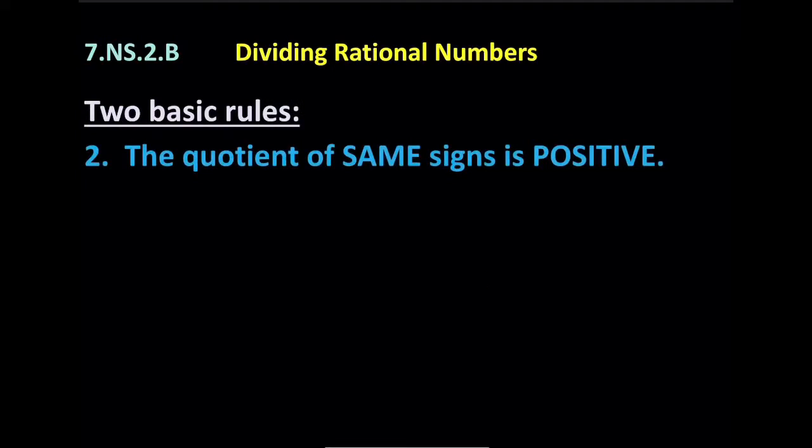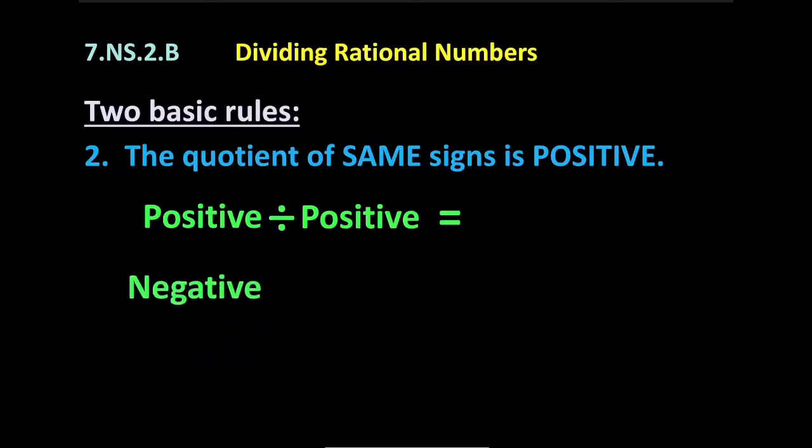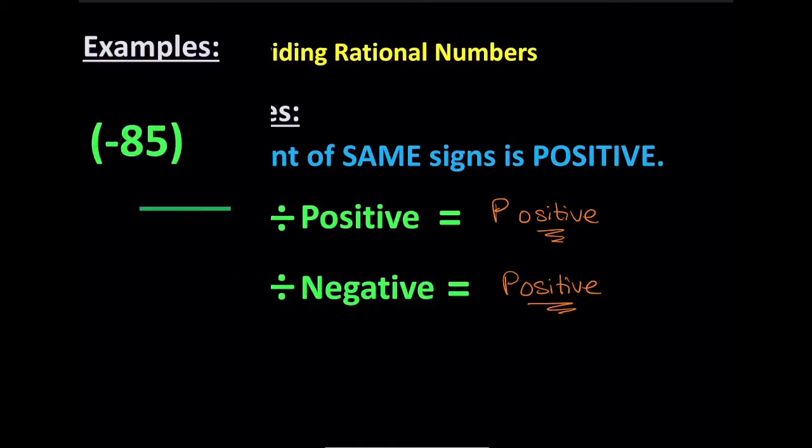Now the second rule is the same as the second rule for multiplying. The second rule is that the quotient of same signs is going to be always positive. So positive divided by positive, and negative divided by negative. It doesn't matter how you do it. Both of those answers is going to be positive.